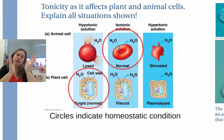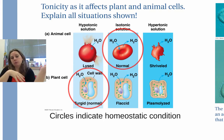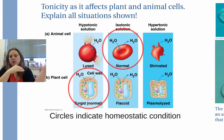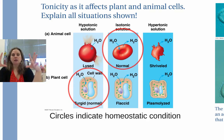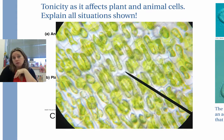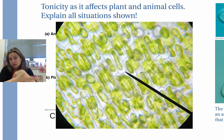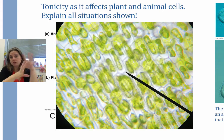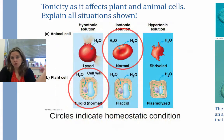A blade of grass wouldn't stand up straight in those conditions. In a hypertonic solution plant cells become plasmolyzed, as we saw with elodea cells — most of the water is gone and there's no coming back from that.